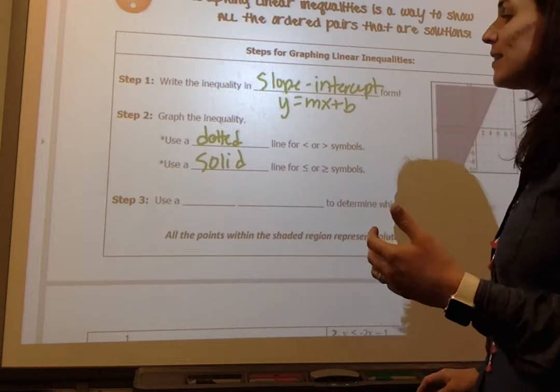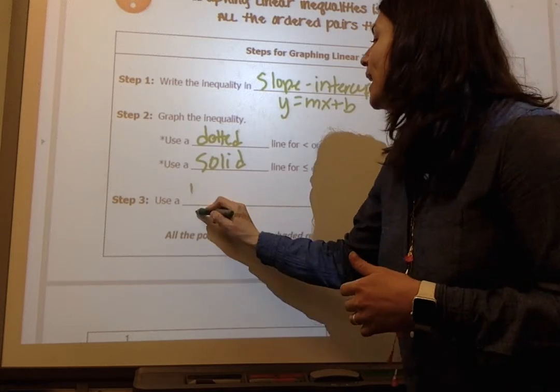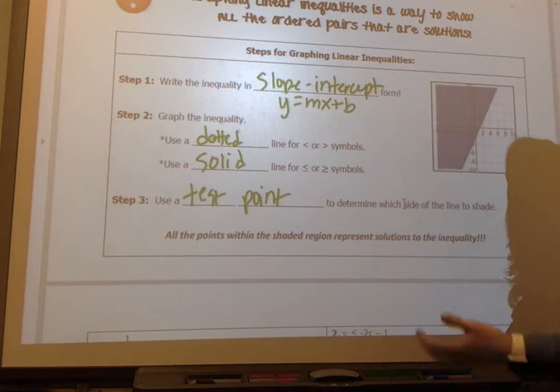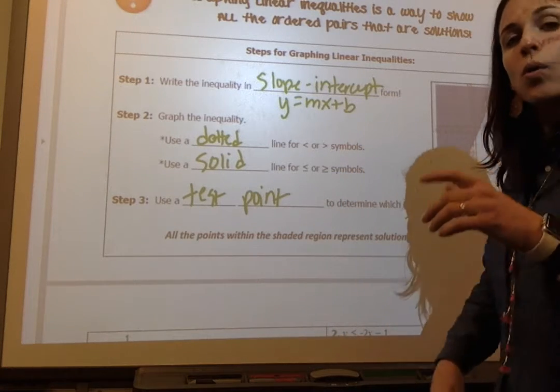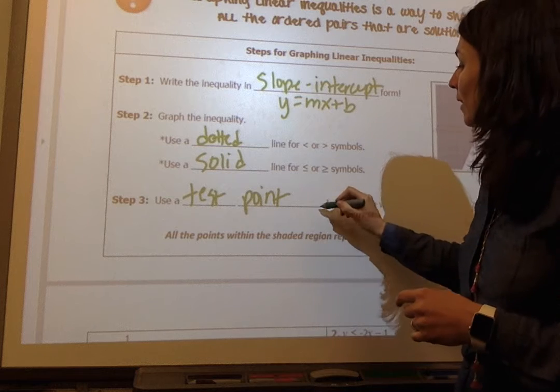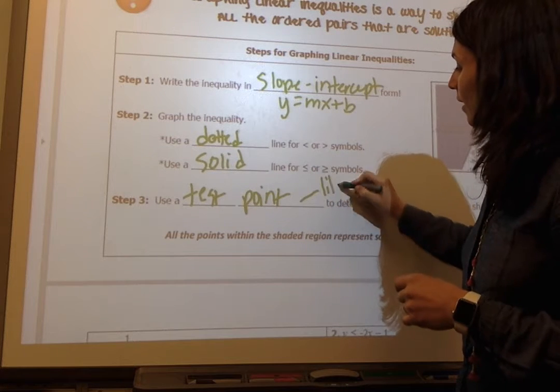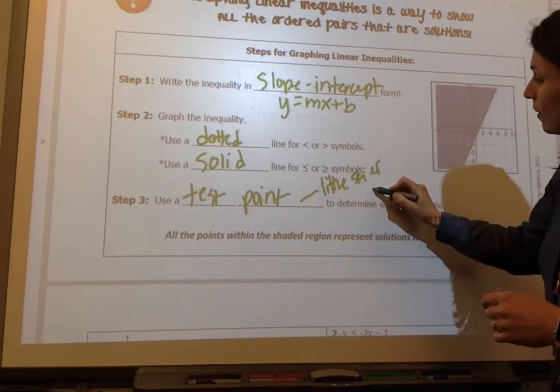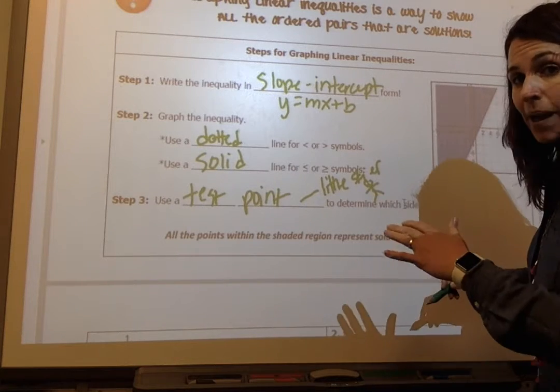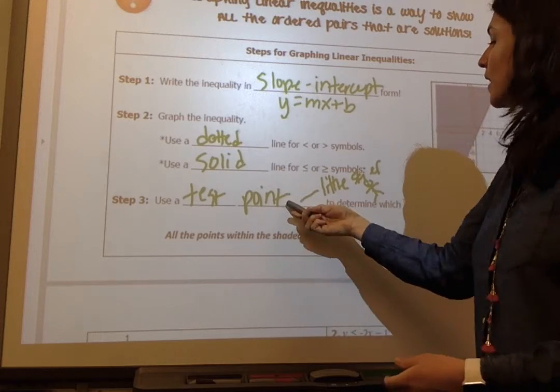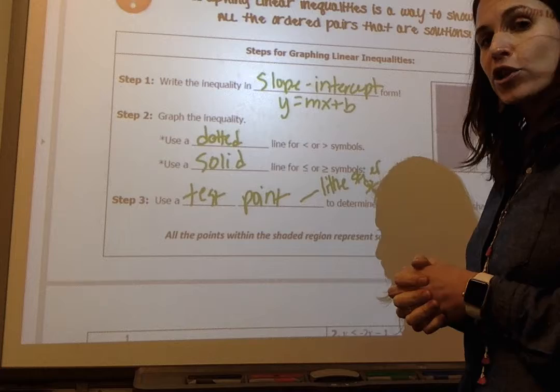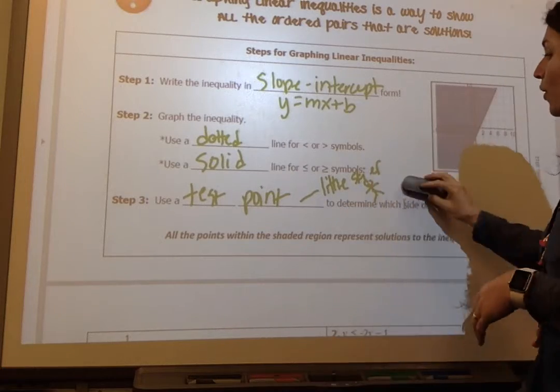And our last step is we are going to use a test point to determine which side of the line to shade. We're also going to use my little skier. And here's my little skier. And you'll remember, little skier goes up the mountain and he skis from left to right. So we're going to use a test point or we're going to use our little skier to check which side of the graph we shade on. So those are the notes.